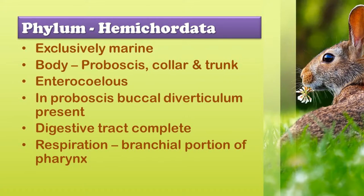Now we are going to discuss about phylum Chordata. 'Hemi' means half and 'chorda' means ring. Hemichordata, before it was considered as a subphylum of Chordata, but now it is regarded as an independent phylum of Invertebrata, because all the characteristic features of this phylum are very close to Echinodermata. Animals of this group possess characters of invertebrates as well as chordates, and so they become the connecting link between both. This phylum consists of a small group of worm-like soft marine organisms.